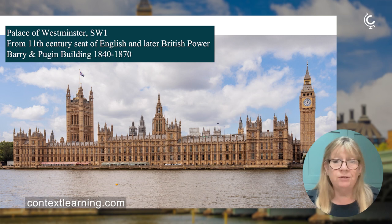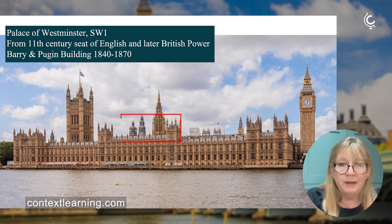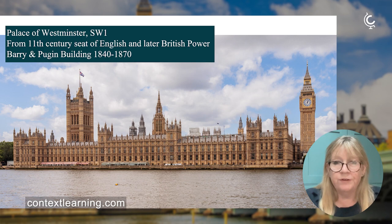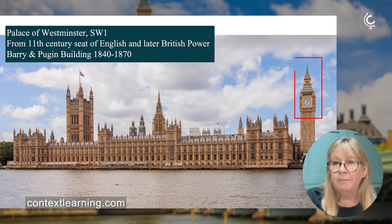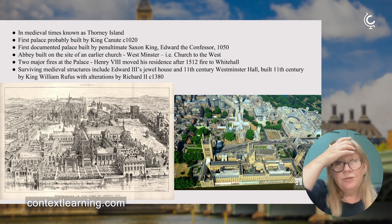His great designer Pugin added all the decorative details — the 'twiddly bits' — to give it that famous outline. When I say twiddly bits, I mean crockets up here, which are actually the chimneys used to heat all the various offices within the building. And over here is the Elizabeth Tower with the famous Big Ben bell inside the clock tower.